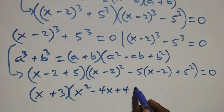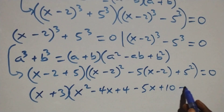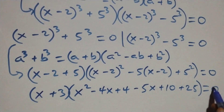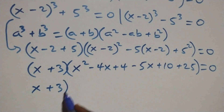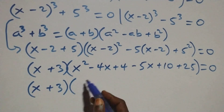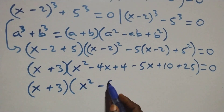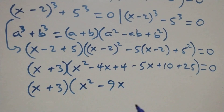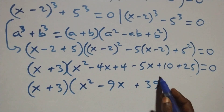Expanding the bracket, we have minus 5x plus 10, then plus 5 squared which is 25, close bracket, equals 0. This gives us (x plus 3) times (x squared minus 4x minus 5x, giving minus 9x, and 10 plus 25 which is 35, plus 4, giving 39), in bracket, equals 0.